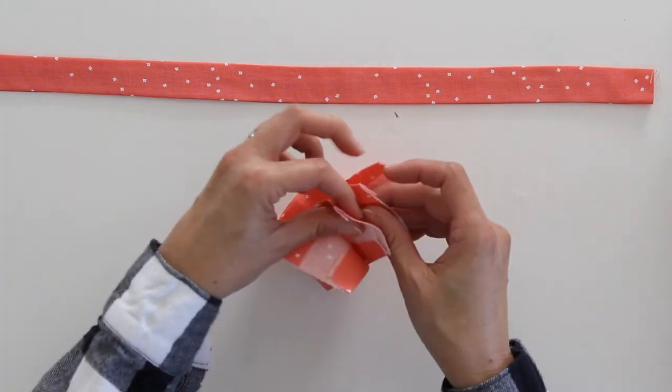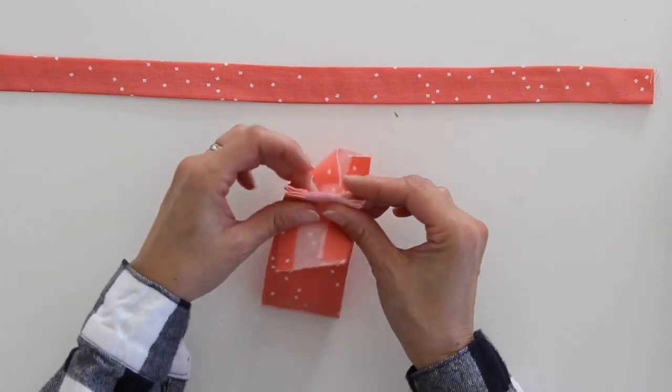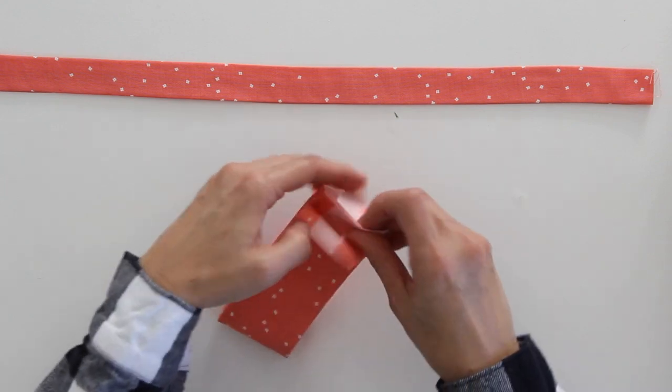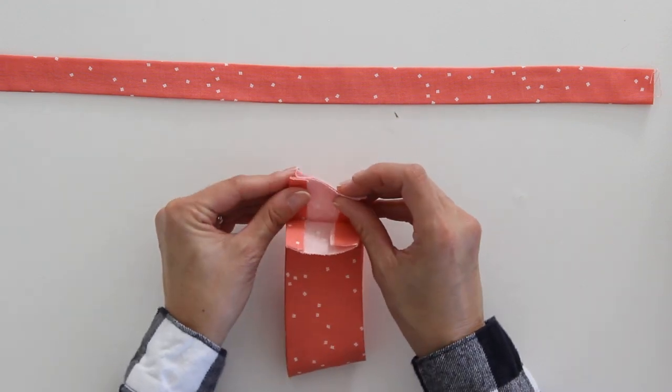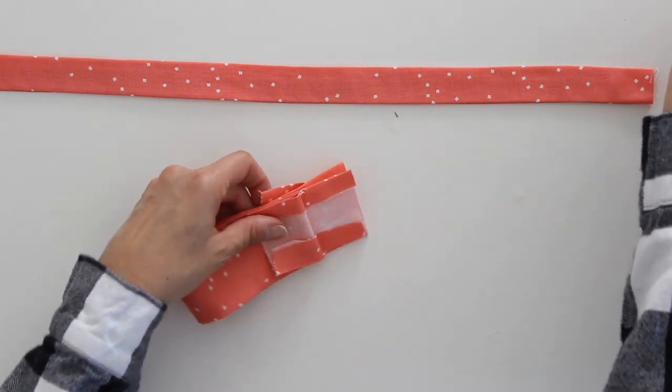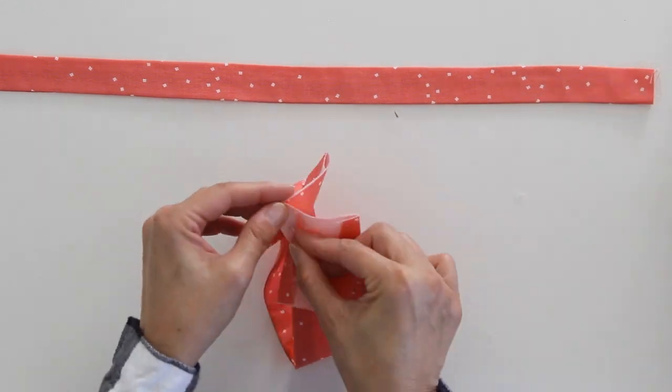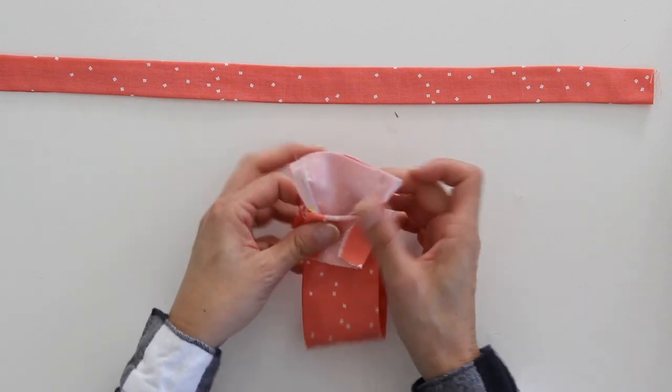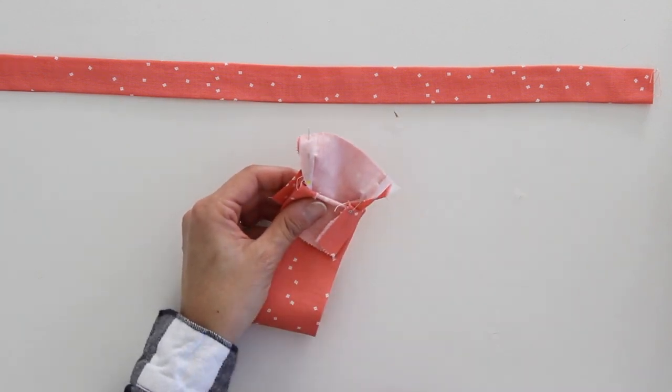So what I need to do now is I need to kind of make a butterfly. I'm going to fold it so that these two edges are together and take the other two edges out of the way. And then I need to stitch across that edge.